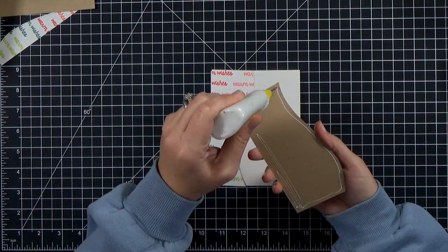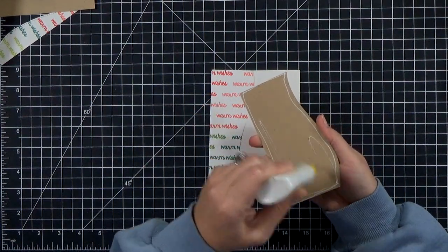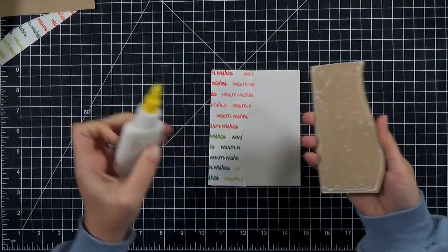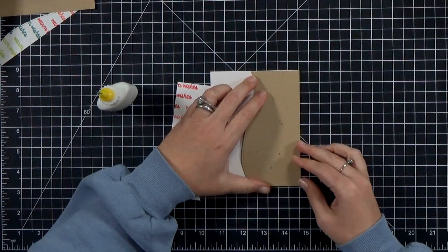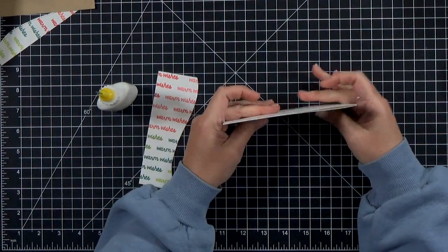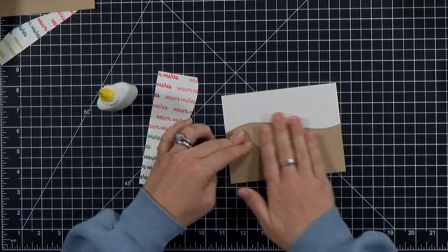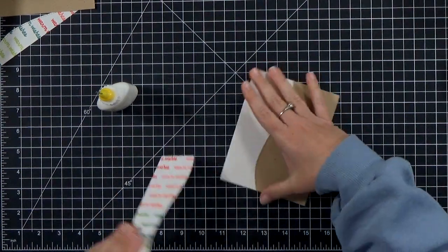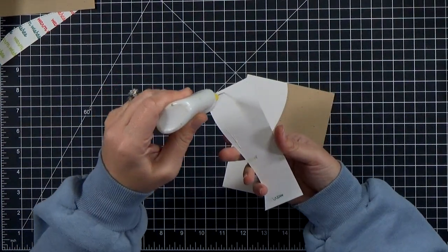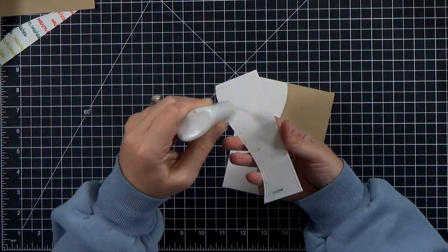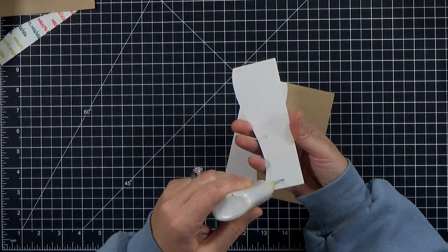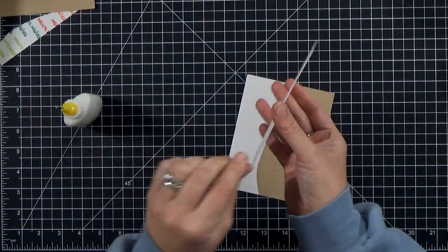So I went ahead and glued those down to my card front. And this is PVA glue in a fine line bottle. This is my preferred glue for gluing paper to paper. I use about one, I think it's an eight ounce bottle of PVA glue. And I think I buy one bottle a year or so, so it lasts for quite a long time. I like having the wiggle room that I get by using wet glue, and it holds up really well.